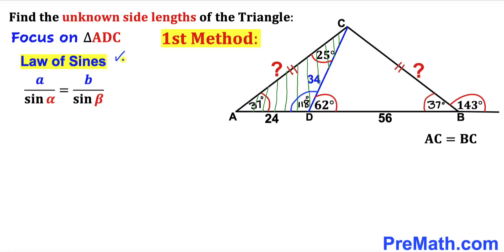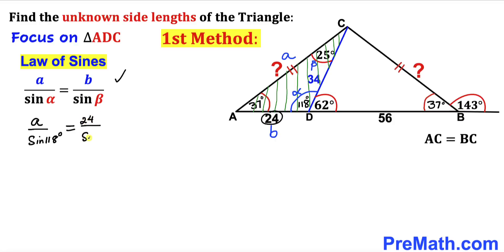Now let's recall the law of sines: A divided by sine of alpha equals B divided by sine of beta. Let's call the unknown side AC as side A, with the opposite angle alpha equal to 118 degrees. Side AD is side B equal to 24, with its opposite angle beta equal to 25 degrees. Filling in the formula: A over sine of 118 degrees equals 24 over sine of 25 degrees.